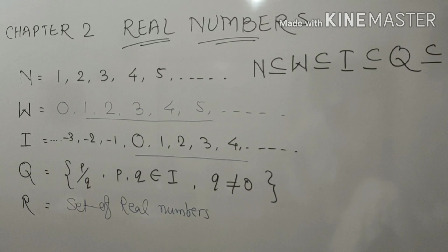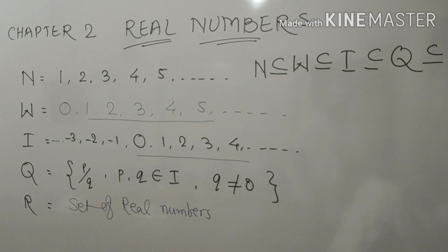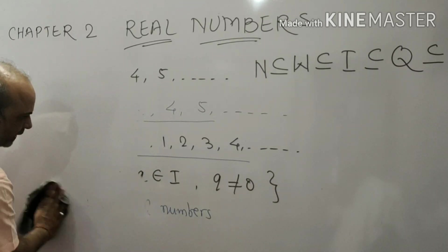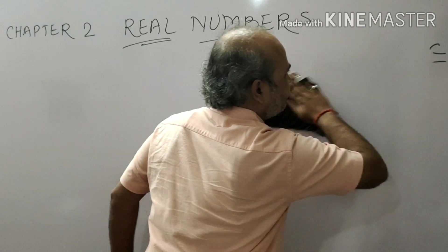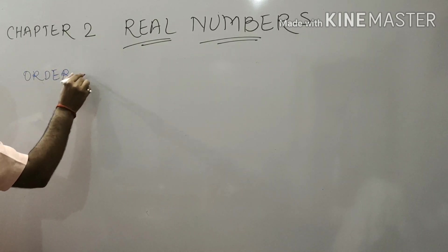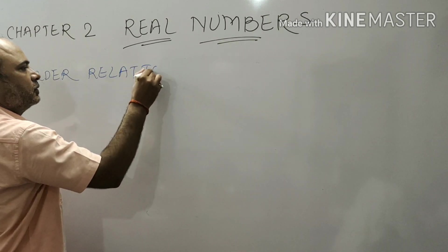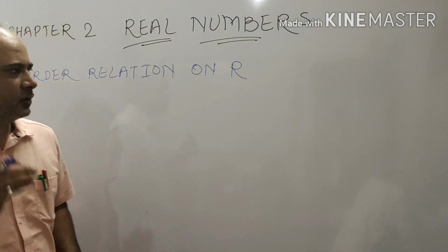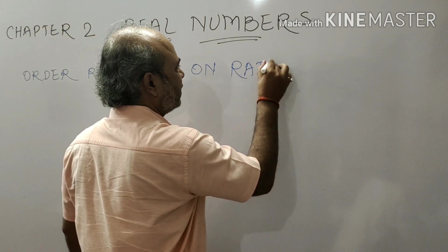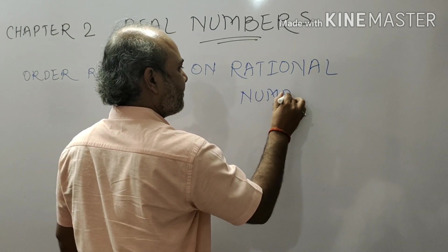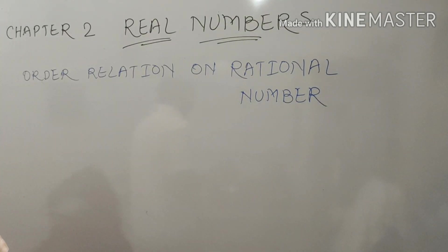Now we are going to see the order relation on rational numbers. So we are going to find out the order relation on rational numbers.